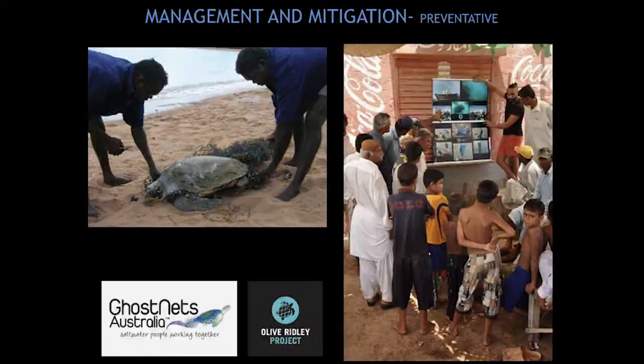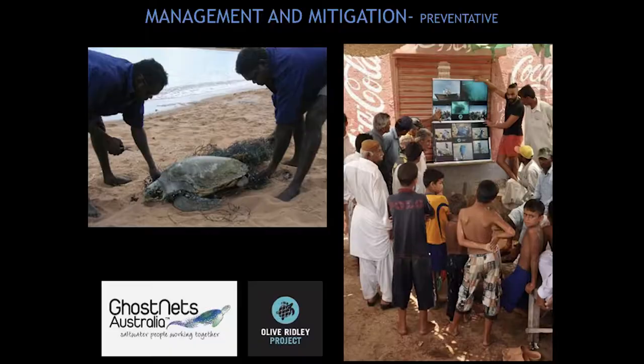For preventative measures, one important measure is education amongst fishing communities. This is very much needed because fishing communities do not want to lose their nets — they are very expensive. What it really boils down to is there is no connection in their minds between losing gear and the impact on the marine environment. By engaging with the fishing community and letting them understand how it affects their livelihood and the future fish stocks, it really engages them in trying to prevent the loss of gear.